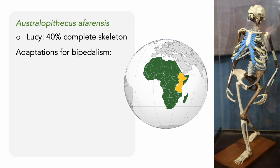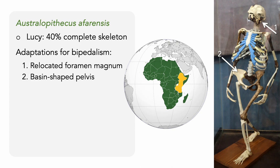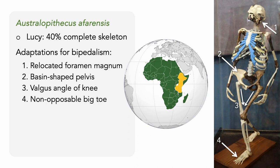Lucy had four key skeletal adaptations for habitual bipedal locomotion. The first is a relocated foramen magnum — the hole in the back of the head for the spinal cord — shifted down towards the base of the head so it can be held vertically for a fuller range of movement while standing. Second, Lucy had a wide basin-shaped pelvis that functions as the center of gravity while also supporting the torso. Third, the femurs point inwards, increasing the valgus angle of the knee, which helps shift the center of gravity more easily while in motion. Fourth, there was a non-opposable big toe — with the toes now aligned, this is better for directing downward force towards the ground.